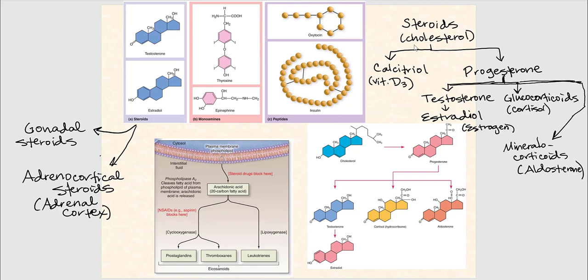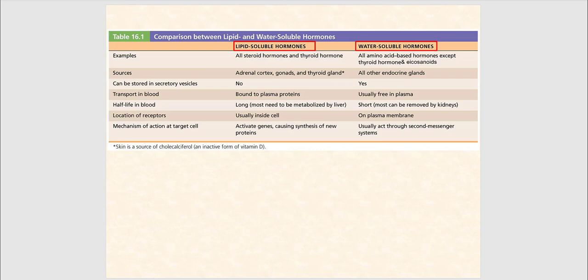Steroids are all derived from cholesterol. The first is calcitriol, the active form of vitamin D3. Progesterone gives us testosterone, and from testosterone we get estrogen or estradiol. Progesterone also gives us glucocorticoids such as cortisol, and mineralocorticoids such as aldosterone. So our familiar steroid hormones — estrogen, testosterone, aldosterone — are all derived from progesterone, which ultimately stems from cholesterol.